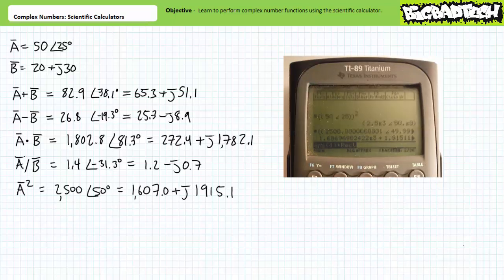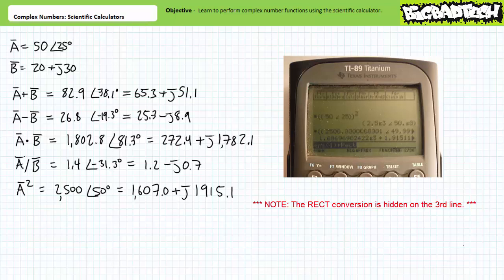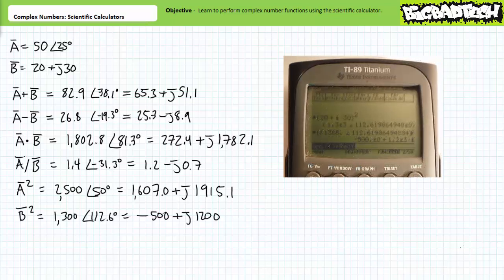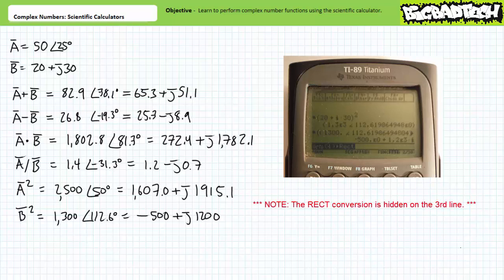If we wish to perform A squared, I enter complex number A in polar format as 50 at an angle of 25 degrees, then raise it to the second power. I get the answer 2500 at an angle of 50 degrees. Converting to rectangular yields 1607 plus J1915.1. To perform exponentiation on a complex number in rectangular format like B, one needs to enclose B in parentheses for the exponentiation to work on both components. B squared returns 1300 at an angle of 112.6 degrees; in rectangular format, negative 500 plus J1200. Note these answers are expressed using engineering format.